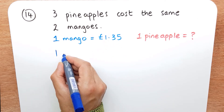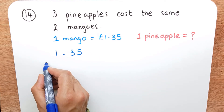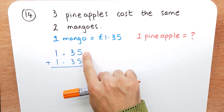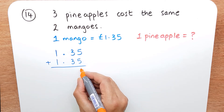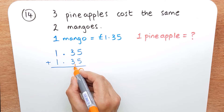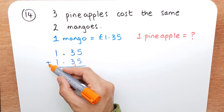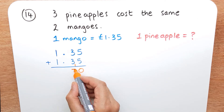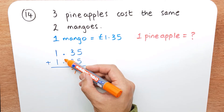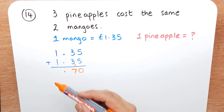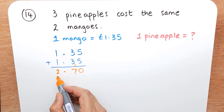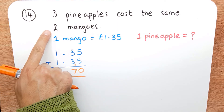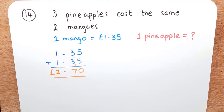We can do this as column addition: £1.35 plus £1.35. Five add five is 10, put zero and carry the one. Three add three is six, plus the carried one is seven. One add one is two. So our two mangoes cost two pounds 70 pence.